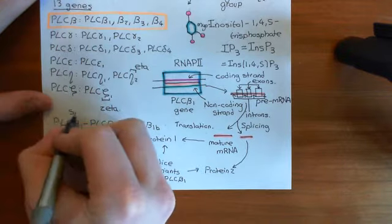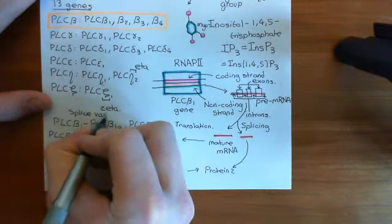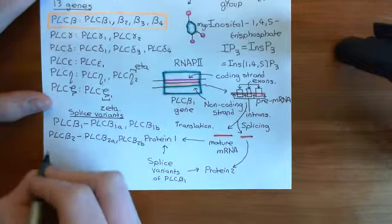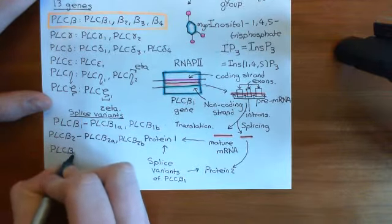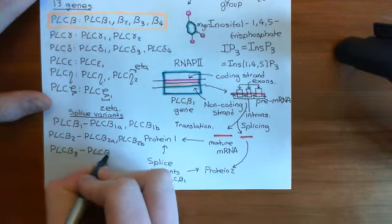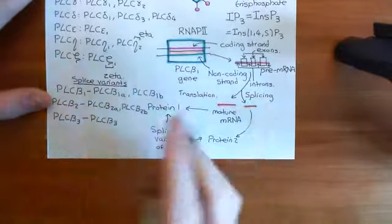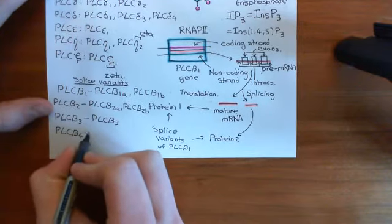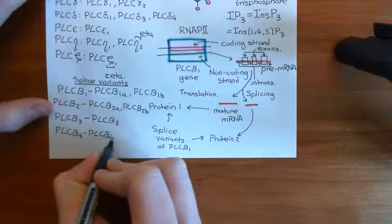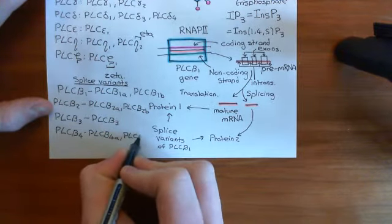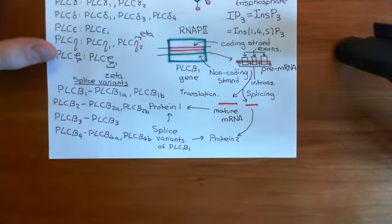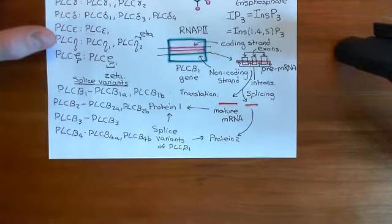Phospholipase C beta 3 has only one known splice variant, so the gene produces just one protein simply called phospholipase C beta 3. Finally, the phospholipase C beta 4 gene has two splice variants: phospholipase C beta 4A and phospholipase C beta 4B. Overall, considering the splice variants across the four genes, there are seven different phospholipase C beta enzymes in total.